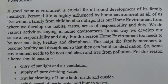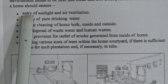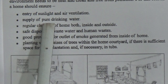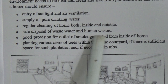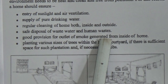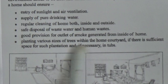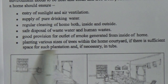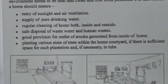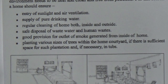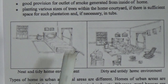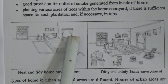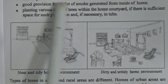A home should ensure the following things to have a healthy home environment: entry of sunlight and air ventilation, supply of pure drinking water, regular cleaning of the home both inside and outside, safe disposal of waste water and human waste, good provision for outlet of smoke generated from inside the home, and planting various sizes of trees within the home courtyard if there is sufficient space. Look at this picture — one shows a neat and tidy home environment and the other shows a dirty and untidy one.